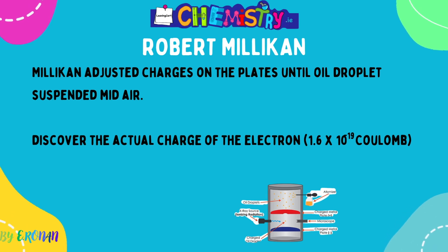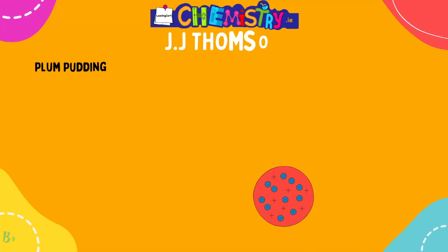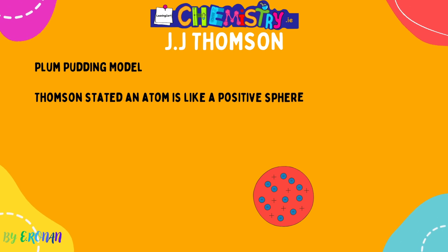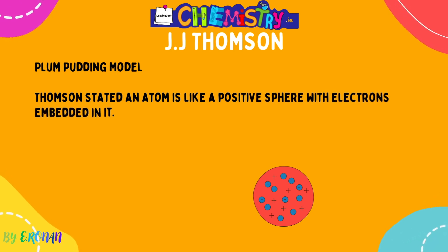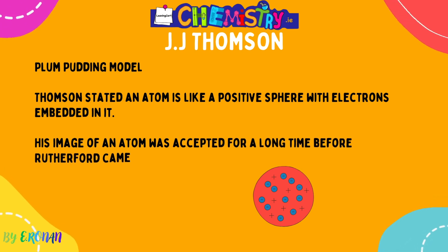Going back to JJ Thomson and his plum pudding model: Thomson proposed a model of what he thought the atom looked like. He stated that an atom is like a positive sphere with electrons embedded in it at random. This model was accepted for a long period of time before Rutherford came along.